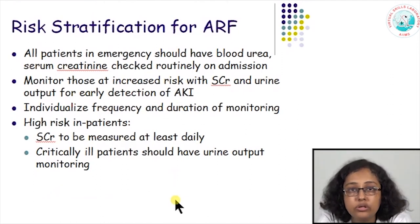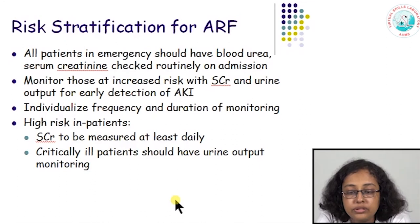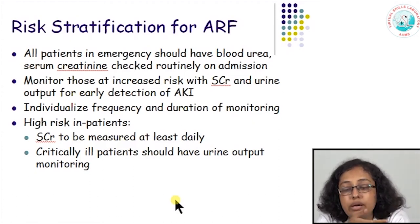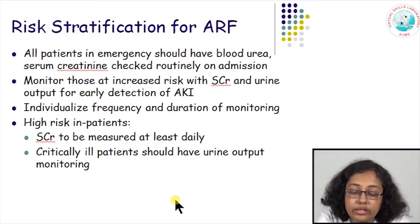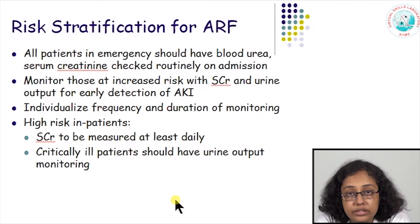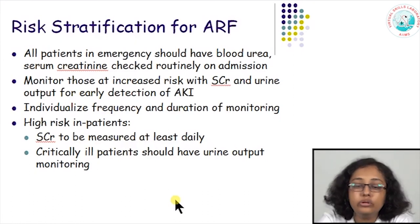When a patient is seen in an emergency or on a renal consult, every patient should have blood urea and serum creatinine checked at baseline routinely. The patient should be evaluated clinically for exposure factors and susceptibility factors. Based on the exposure, the patient is stratified as low risk, medium risk, or high risk. Based on this risk stratification, the patient should undergo serum creatinine testing and urine output monitoring at regular intervals for early detection of AKI. The frequency and duration of monitoring will change depending on the degree of risk, and if a patient is at high risk, serum creatinine should be measured daily initially, with urine output monitoring for all critically ill patients.